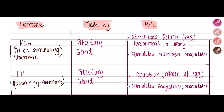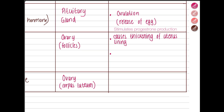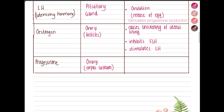Luteinizing hormone also stimulates progesterone production. Estrogen and progesterone are both responsible for the uterus lining. Estrogen causes the uterus lining to thicken, inhibits FSH production, and stimulates LH — so FSH is reduced and LH increases. Progesterone is responsible for maintaining the uterus lining, and it inhibits the production of both FSH and LH.